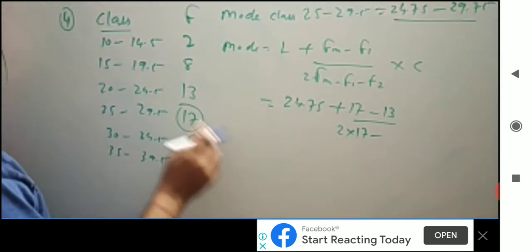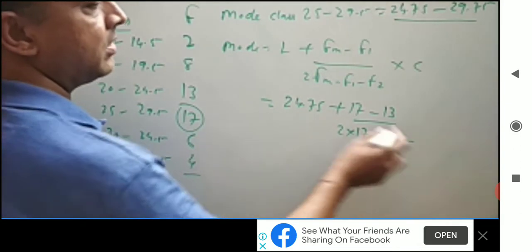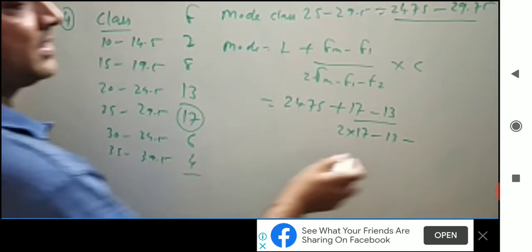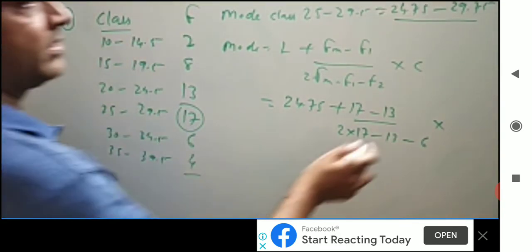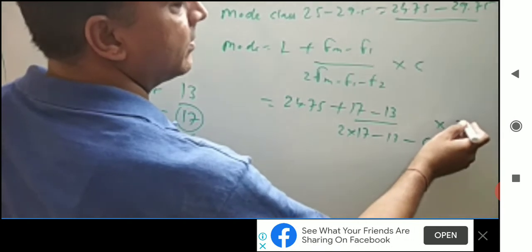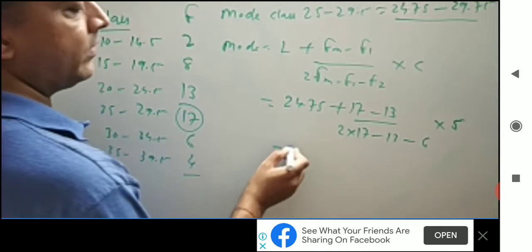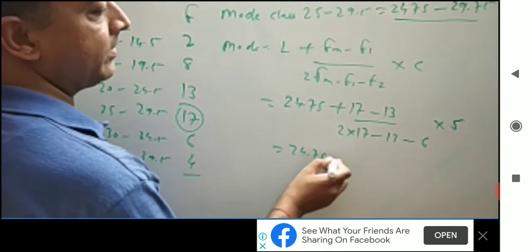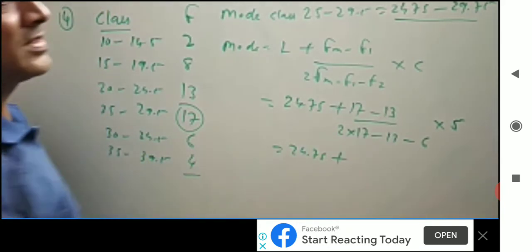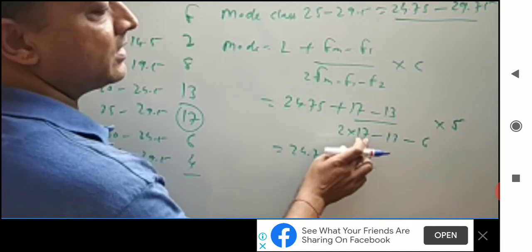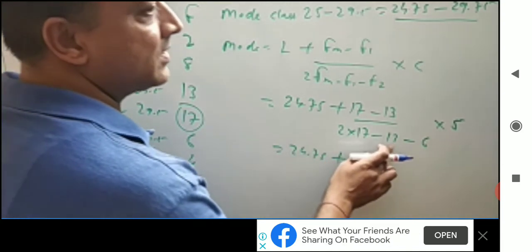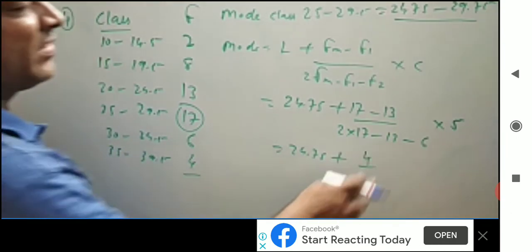F1 is 13, F2 is 6, into C that is class interval 5. So 24.75 plus 17 minus 13, that is 4, divided by 34 minus 13 that is 21, minus 6 is 15, into 5.